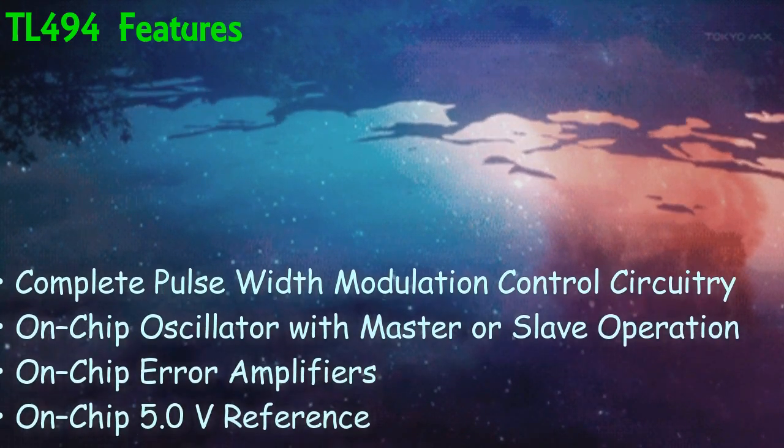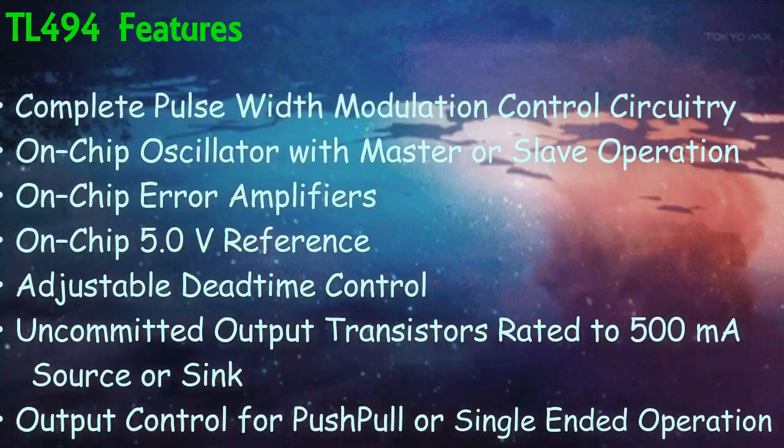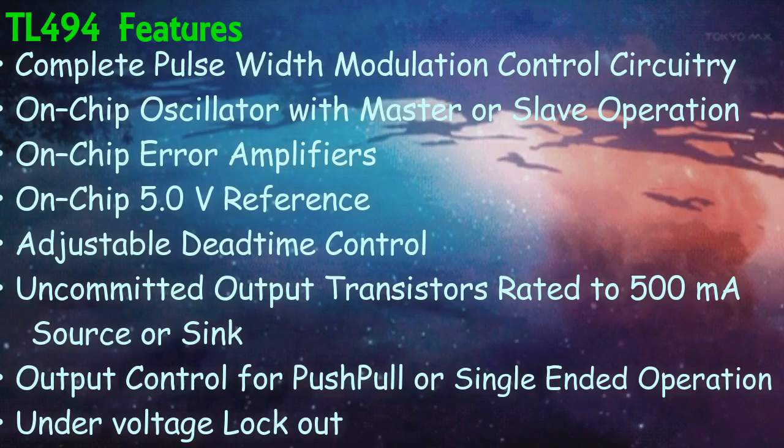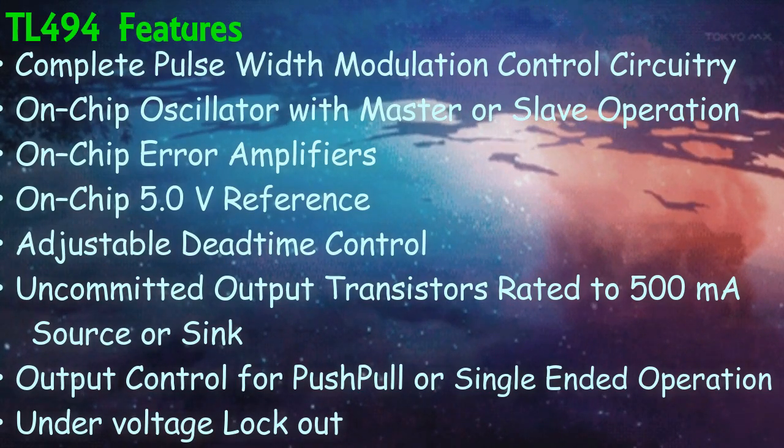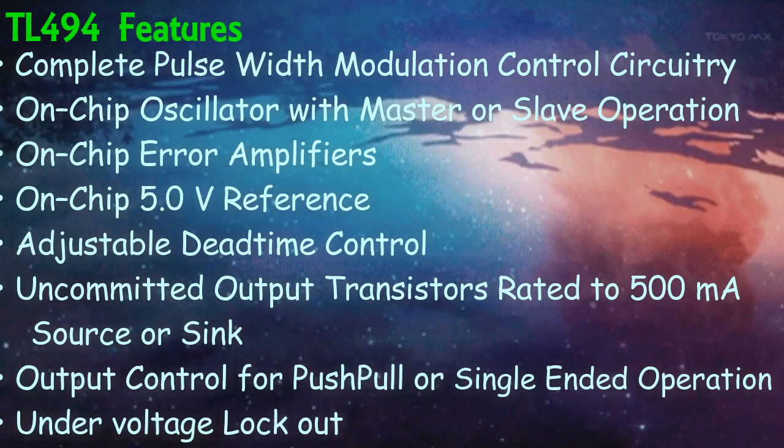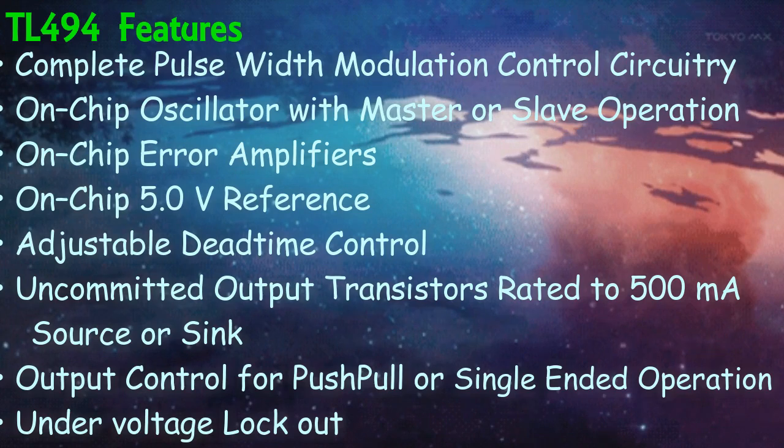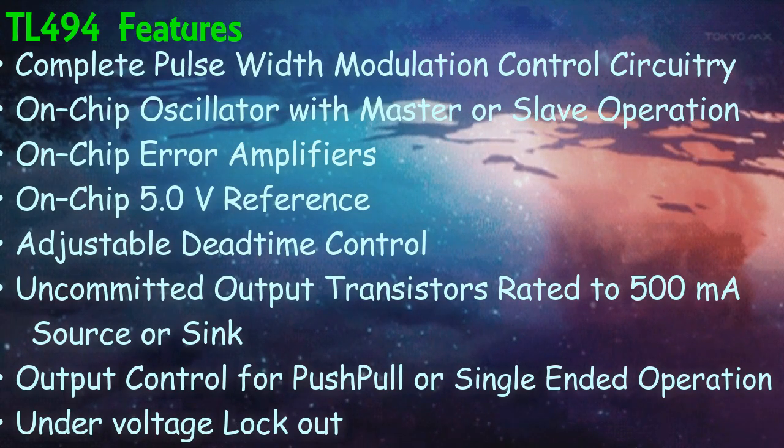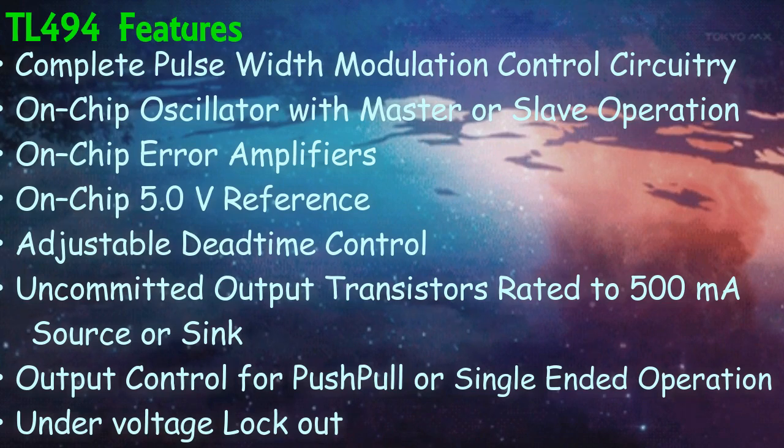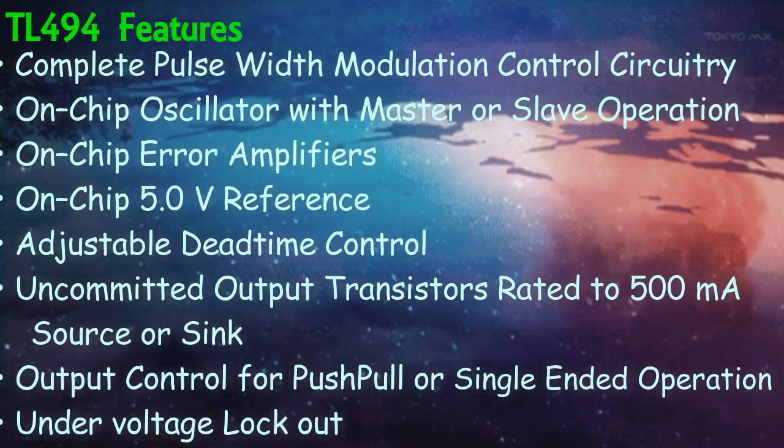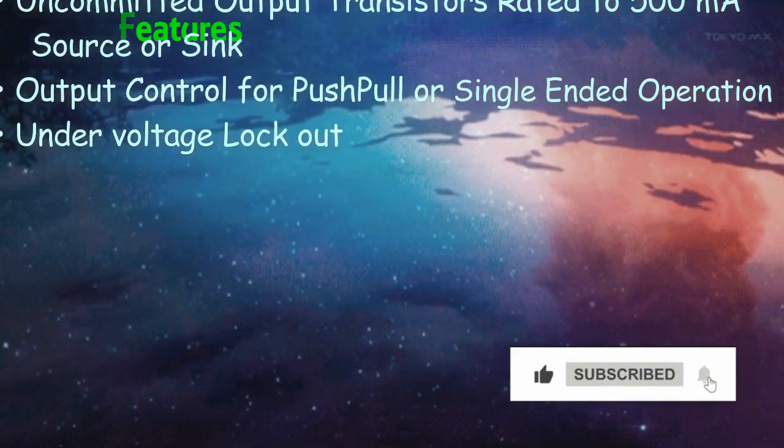TL494 features complete pulse width modulation control circuitry, on-chip oscillator with master or slave operation, on-chip error amplifiers, on-chip 5V reference, adjustable dead time control, uncommitted output transistors rated to 500 milliamps source or sink, output control for push-pull or single-ended operation, and under voltage lockout.